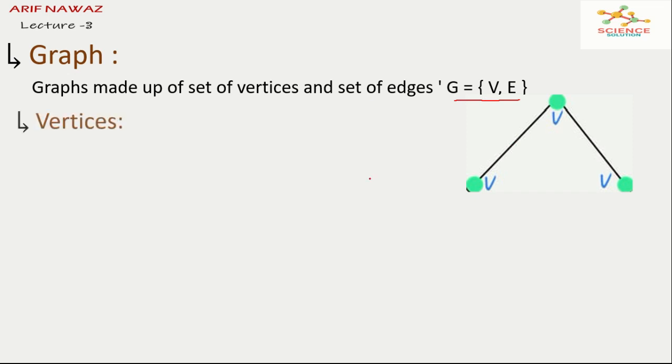What are vertices? Vertices are points. For example, in given graph we see the points or vertices are V1, V2, V3. There are three vertices in this graph.